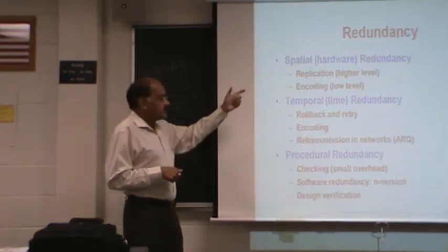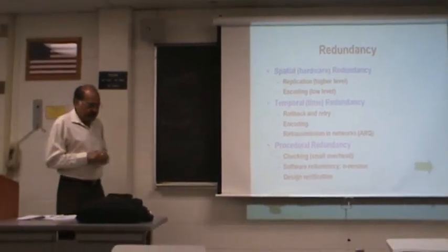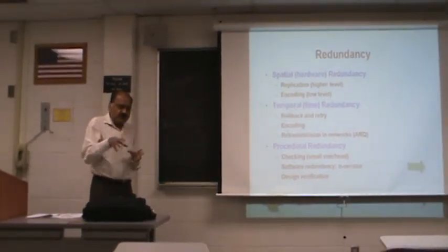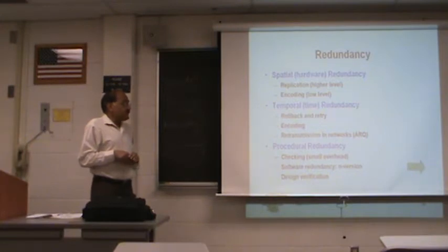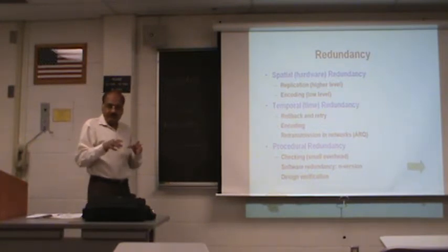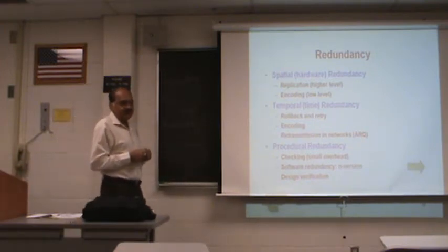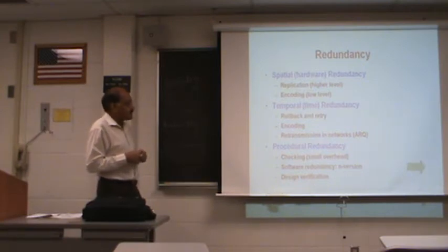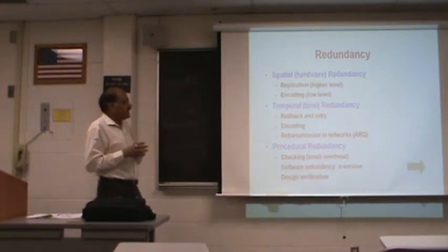There are two forms of redundancy. One is replication — you can replicate something at a higher level. For example, in some systems you have multiple copies of the processor chip. Or you could have redundancy at a lower level. When you use encoding, you use a few extra bits, perhaps for parity checking or correction. That is low-level redundancy, but it uses extra hardware, so we call it hardware or spatial redundancy.